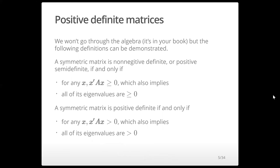A special type of symmetric matrix is called a positive definite matrix. A symmetric matrix is non-negative definite or positive semi-definite if for any x the quadratic form is greater than or equal to 0. This implies that all of its eigenvalues are greater than or equal to 0.